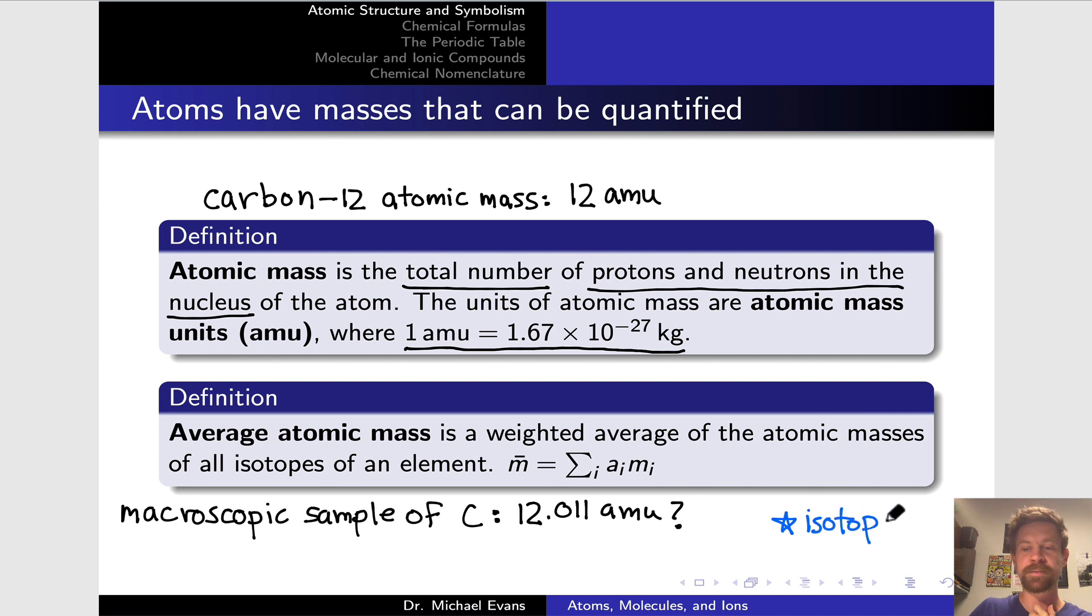In a natural sample of an element, the natural abundances of various isotopes are going to be observed, and this creates a situation where the mass we observe at a macroscopic scale, something like Avogadro's number, 10 to the 23rd carbon atoms, is going to be an average. The mass that we observe will be an average of the masses of the individual isotopes within the sample.